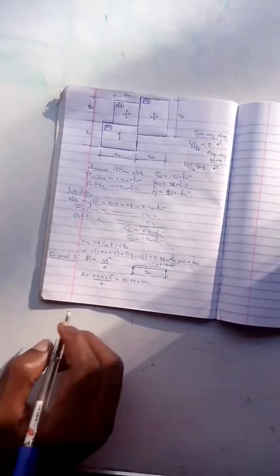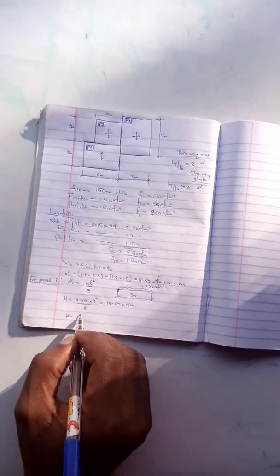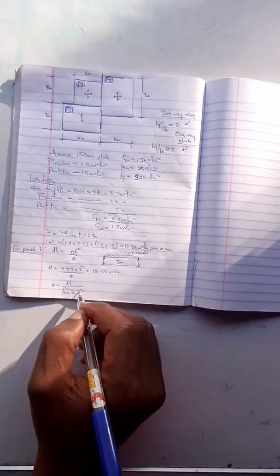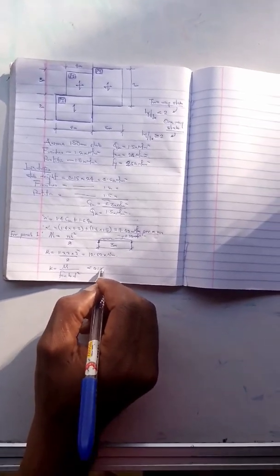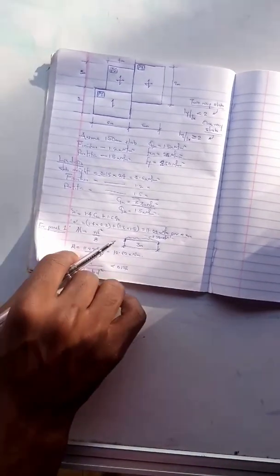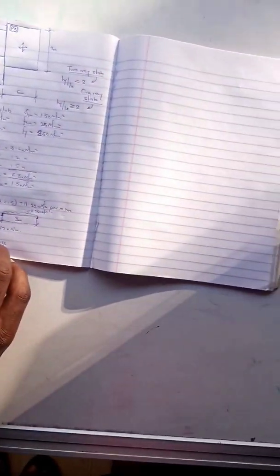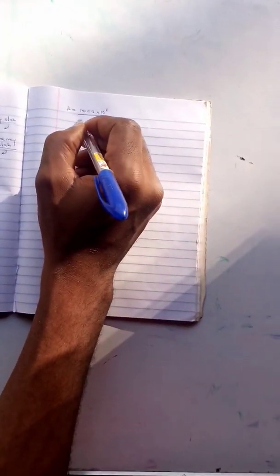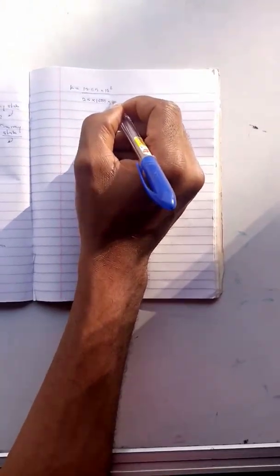From here we can obtain our k, the value for our k. The formula for k is M over fcu times b times d square, and the value for this should be less than 0.156. We have our k to be 12.62 times 10 to the 6 over fcu 25, our b is 1000. This should give 0.033 which is less than 0.156.